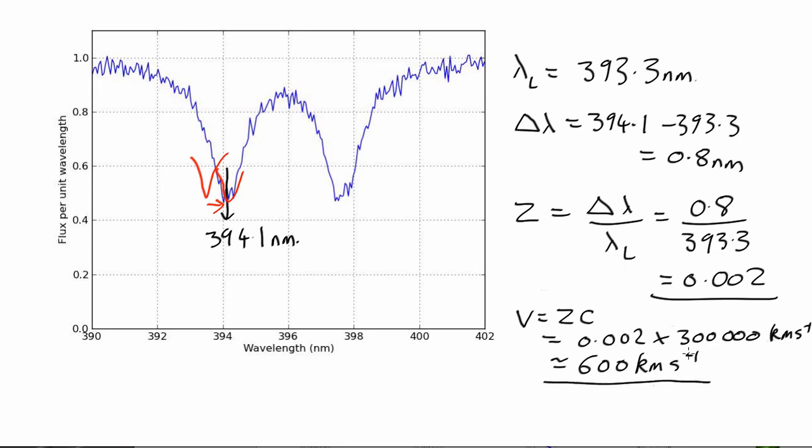So that's how fast this thing is moving. Is it going towards us or away from us? You can see that the line shifted from where it would have been there if it had been rest wavelength in the laboratory to over here. It's moved to a longer wavelength to the red. So it's a redshift, so it's receding from us moving away.